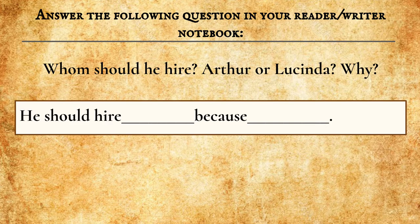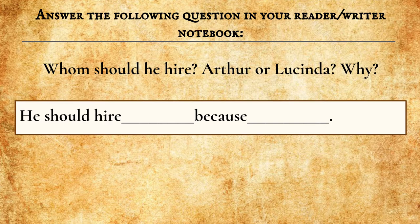Now that we're back, we want you to answer the following question in your reader-writer notebook: which is essentially, who should Peter hire — Arthur or Lucinda? Why? Feel free to use the sentence frame in the white box, or you can answer the question using your own sentence structure. That would be a great time to pause and answer. So what effect did citing evidence have on Lucinda and Arthur's answers? In the box, write the effect of Lucinda's citing evidence was, as well as the effect of Arthur's not citing evidence was. Now let's take time to pause the video.